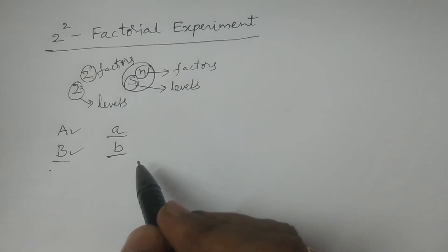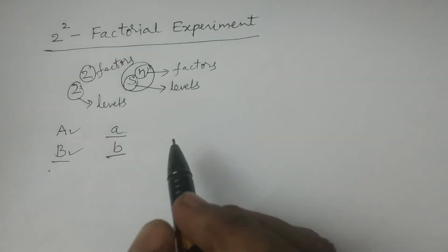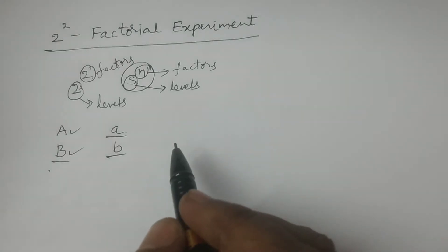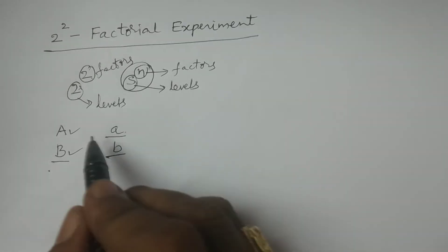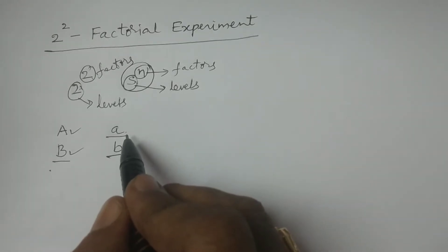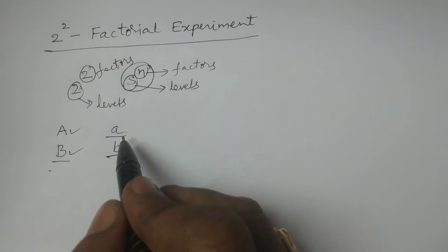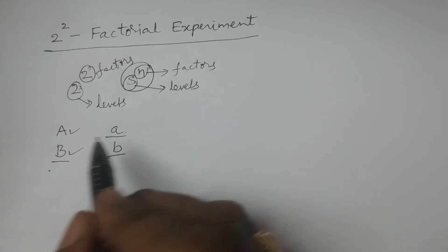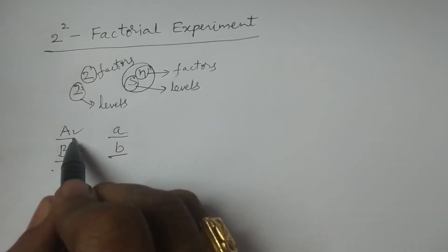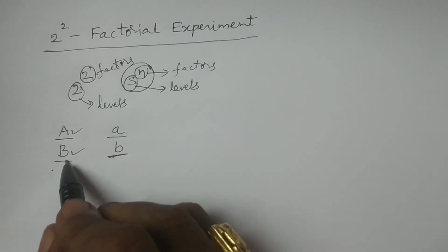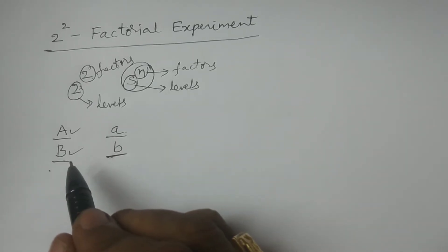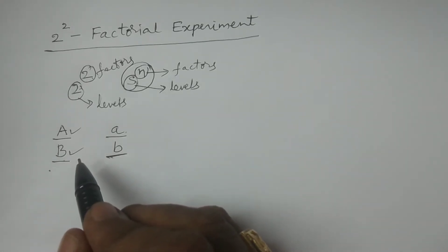What about the 1st level? The 1st level is indicated by the absence of the corresponding letter. If a is not there, it is an indication of the 1st level of factor A. If b is not there, it is an indication of the 1st level of factor B.